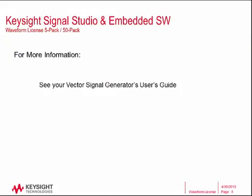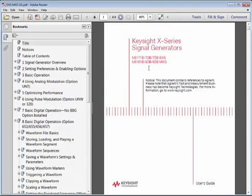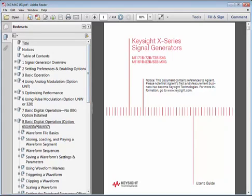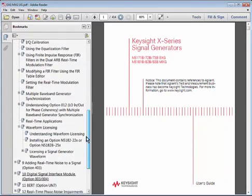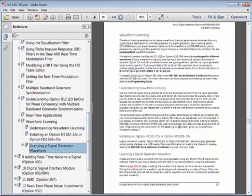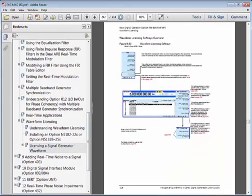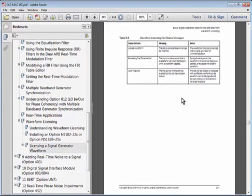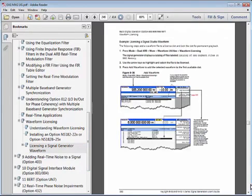For more information on waveform licensing, please see your vector signal generator's user guides. These guides contain quite a bit of information — for the EXG and MXG, the waveform licensing section is usually found in the Basic Digital Operation chapter, in the baseband generator section towards the bottom. There are several pages on how to use it. Thank you for watching.